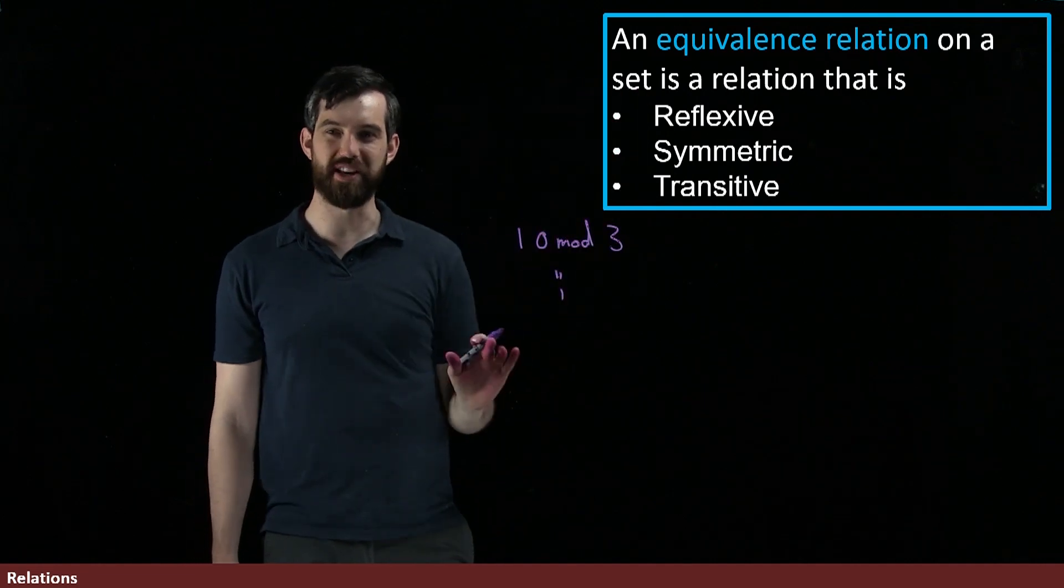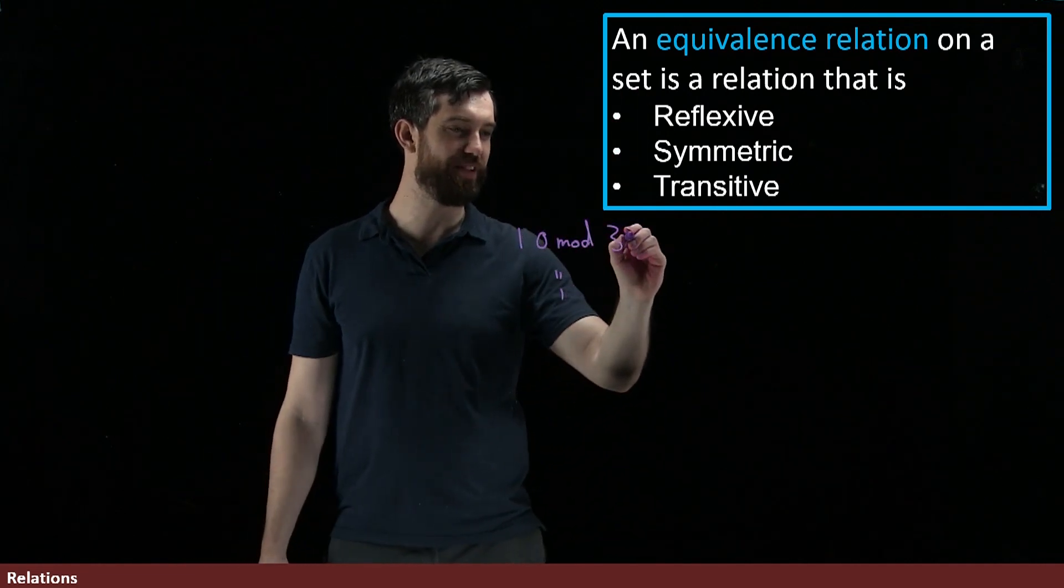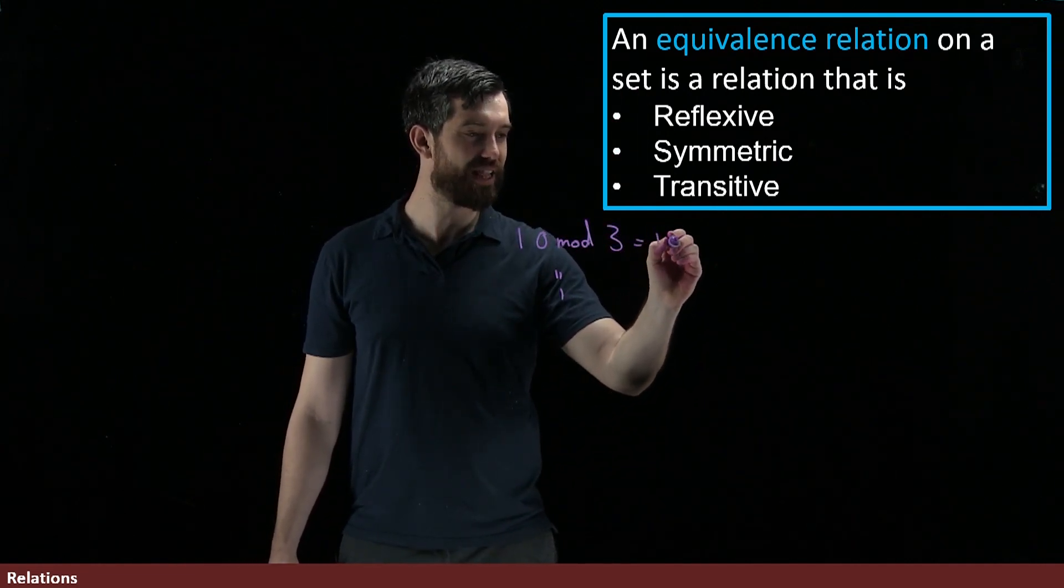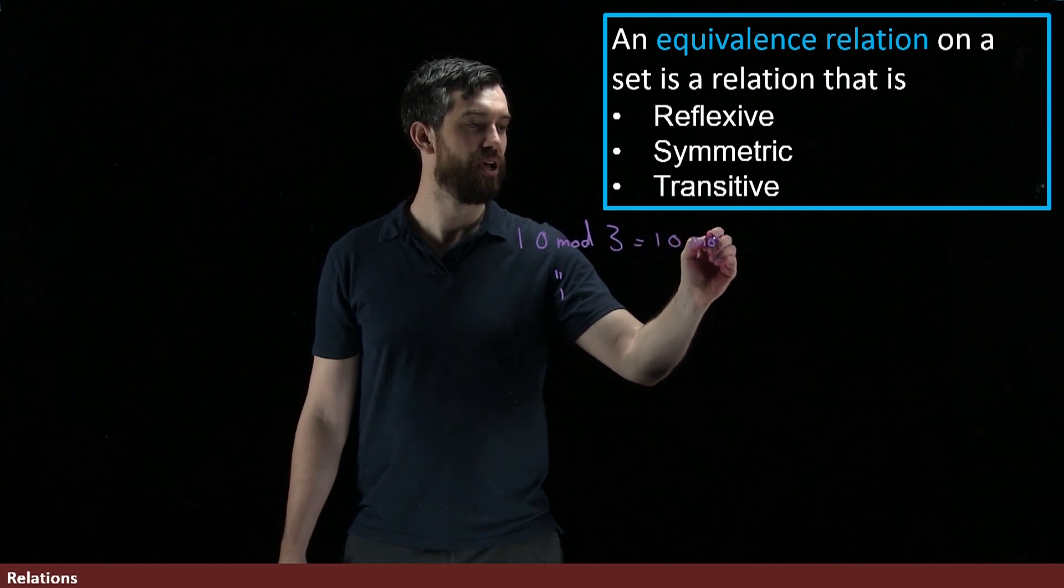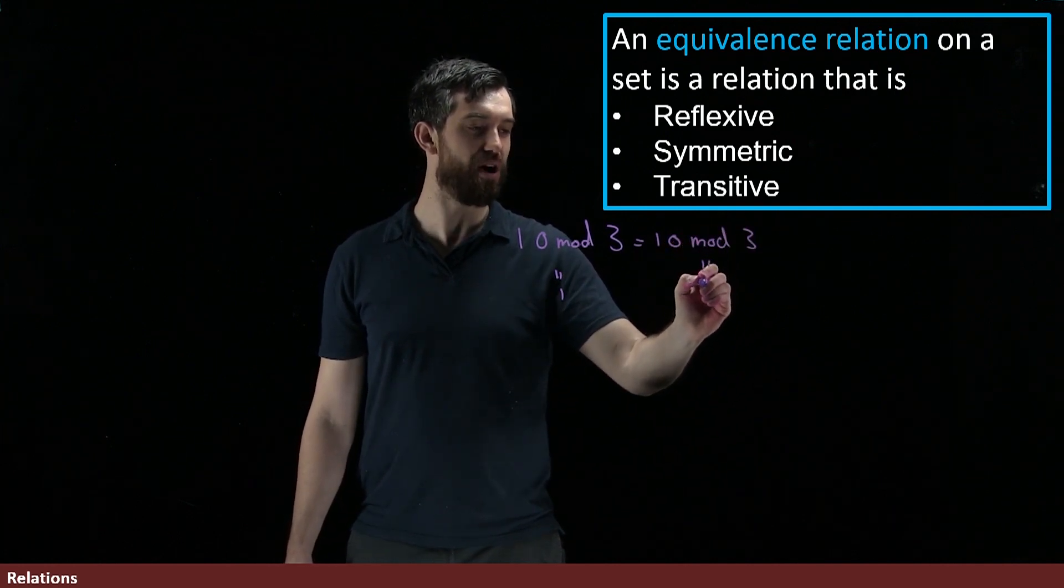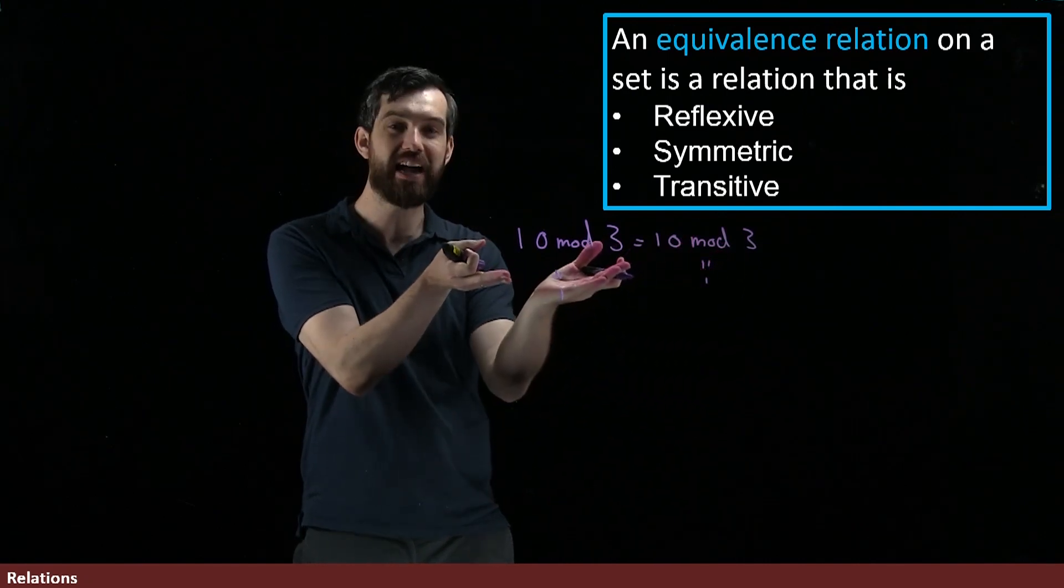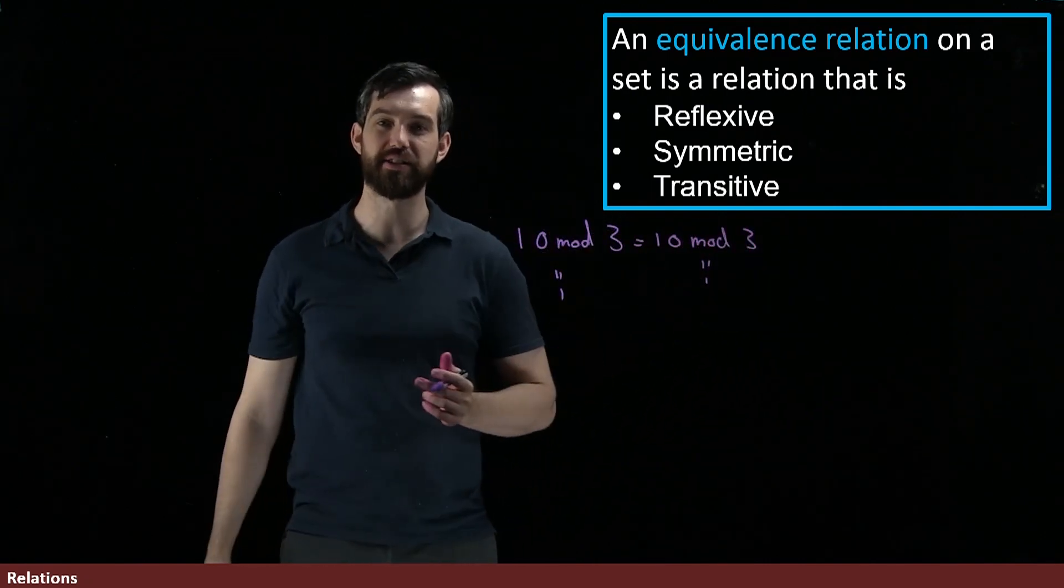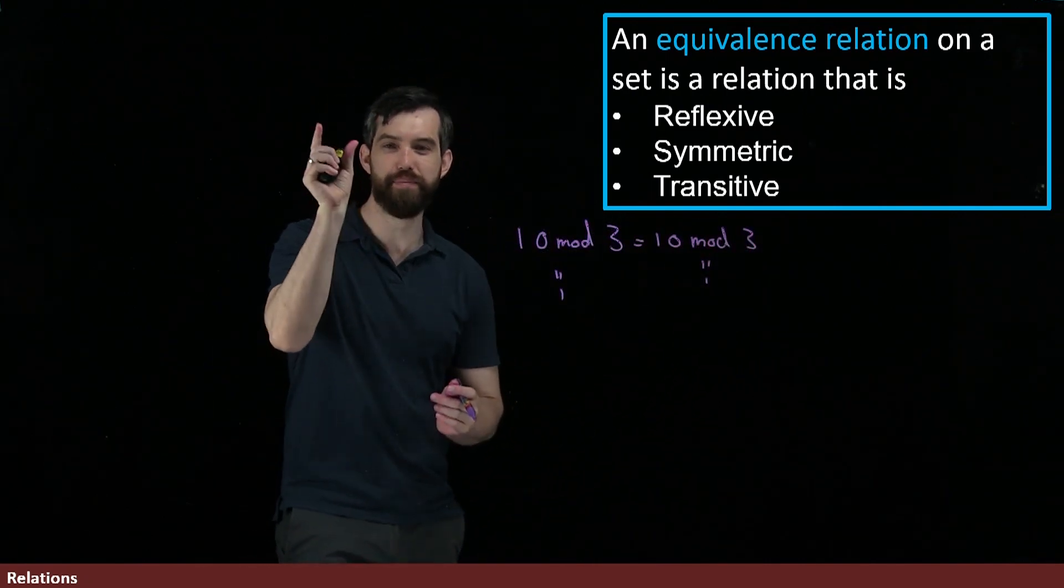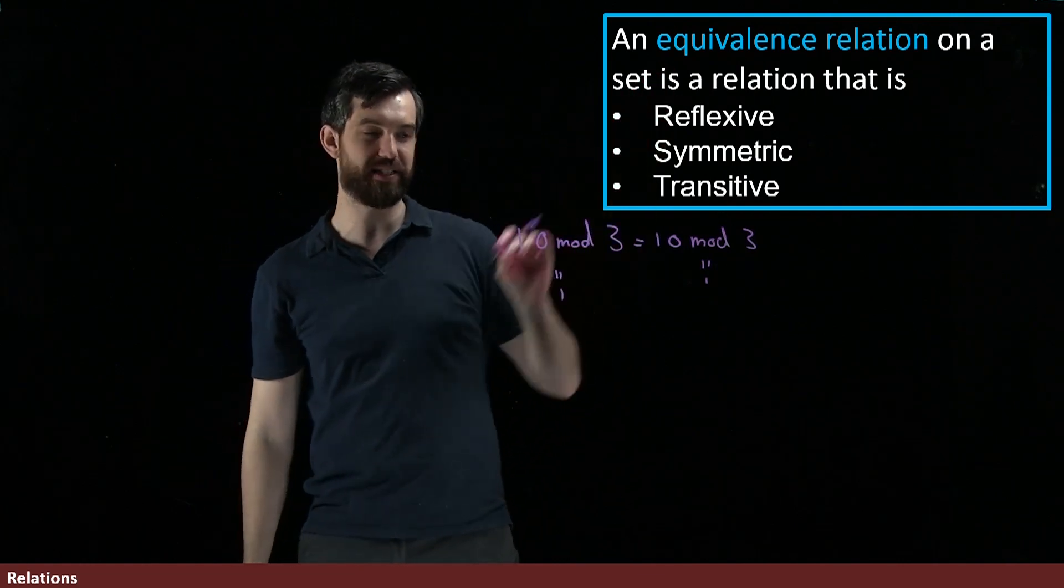Doing the reflexive point is pretty trivial here. We're just going to be saying that this is exactly the same thing as 10 mod 3, which is also equal to 1. Of course it is. So indeed, it's reflexive. The x is related to the x. So equality in modular arithmetic obeys the reflexivity property.